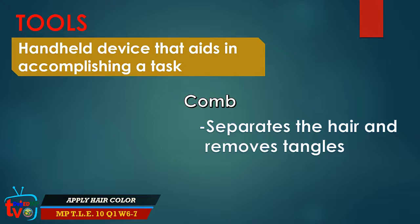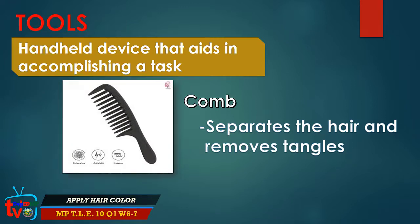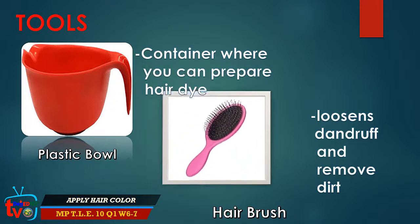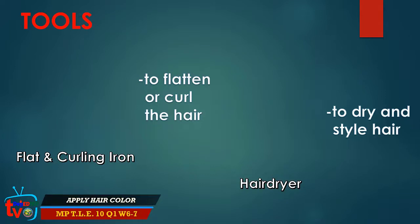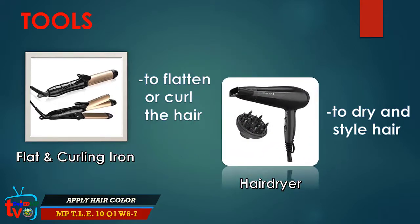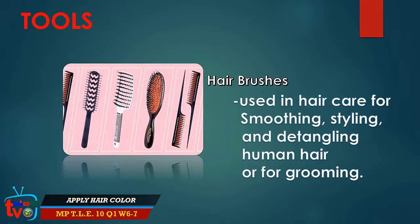Tools are handheld devices that aid in accomplishing a task. A comb separates the hair and removes tangles. A plastic bowl is a container where you can prepare hair dye. A hairbrush loosens dandruff and removes dirt. Flat and curling iron flatten or curl the hair. A hair dryer dries and styles hair. Hairbrushes are also used for smoothing, styling, and detangling human hair.